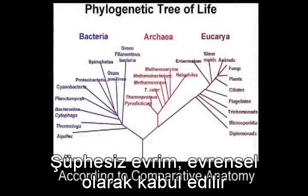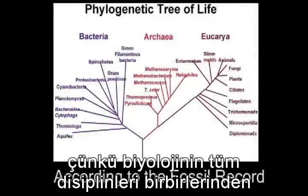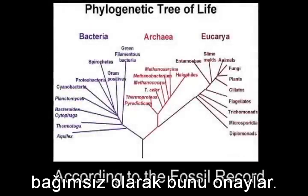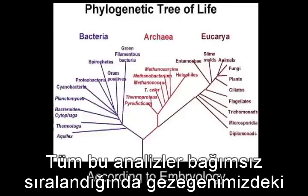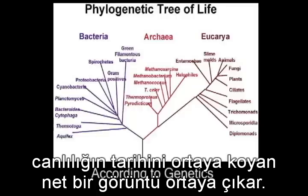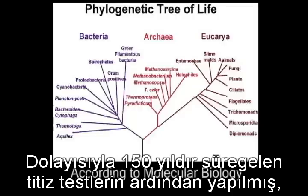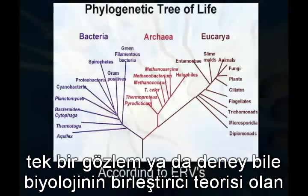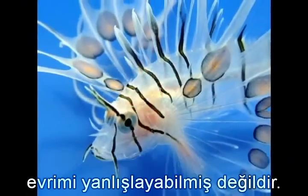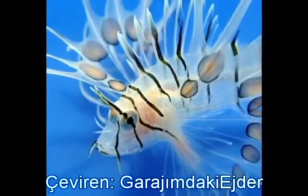Indeed, evolution is universally accepted as the origin of species simply because every aspect of every discipline in biology confirms it independently. All of these analyses independently line up to give us a clear picture as to the history of life on this planet. It is for this reason that, after 150 years of rigorous scientific testing every day, not a single observation or experiment has been made which has falsified the unifying theory of biology.